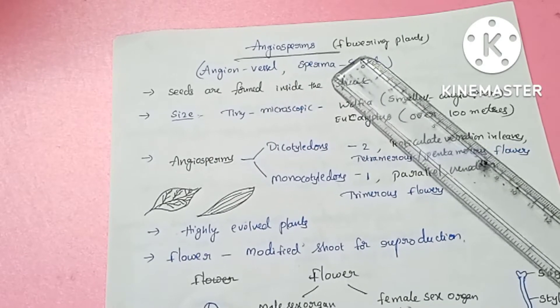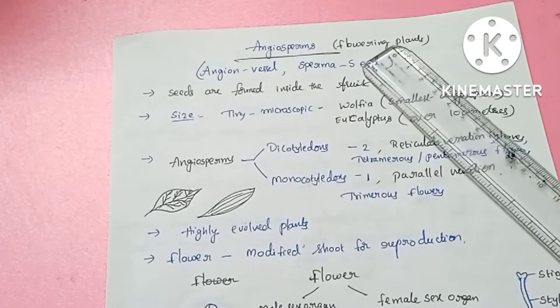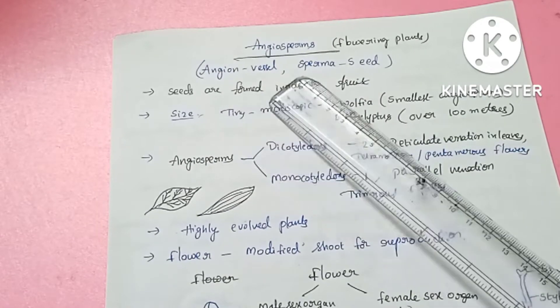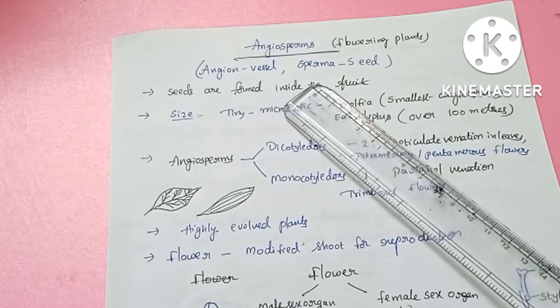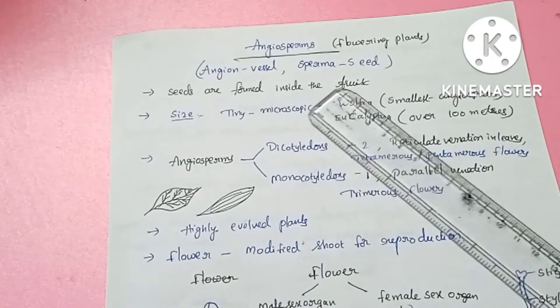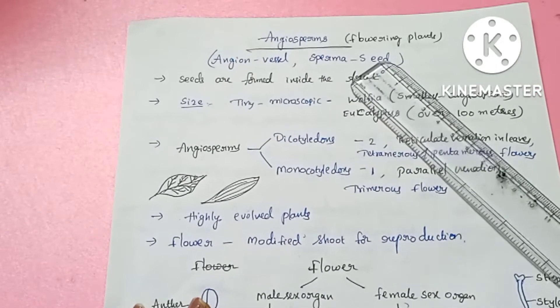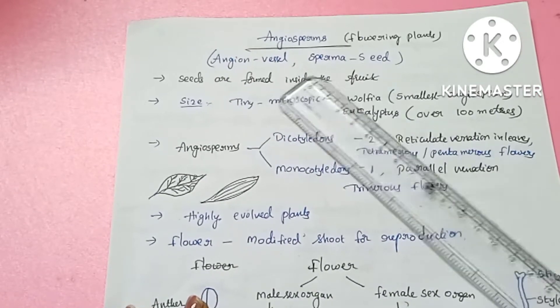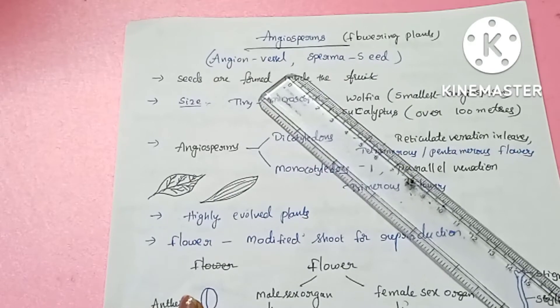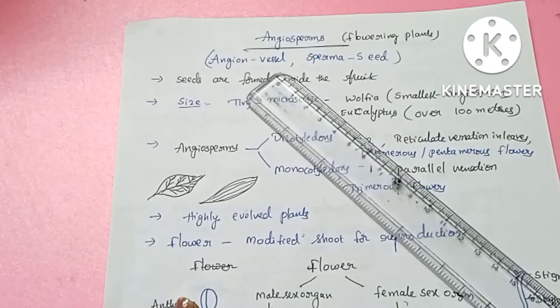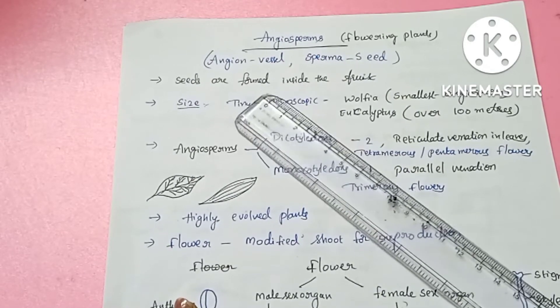Angiosperms are flowering plants. 'Angion' means vessel and 'sperma' means seed. Seeds are enclosed in a vessel, and that vessel is the fruit.